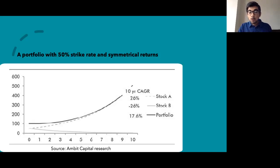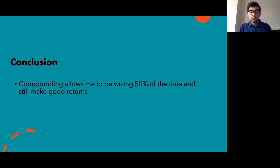So what's the conclusion of this? What is the real breakthrough with this? The real breakthrough for me, which is extremely insightful is that I can be wrong 50% of the time and still make good returns. Now let that sink in. I'll repeat that. I can be wrong 50% of the time and I'll still make good returns. Why? Because the power of compounding is asymmetric in nature.